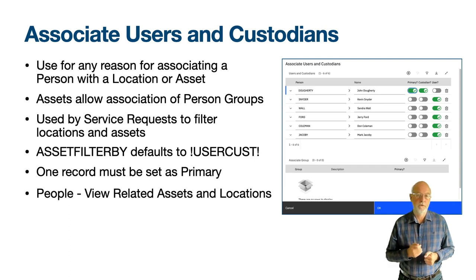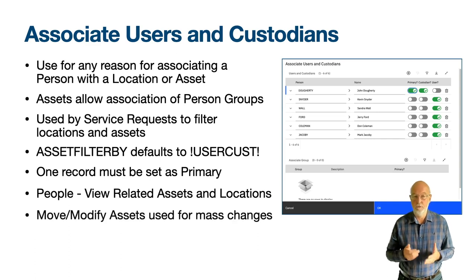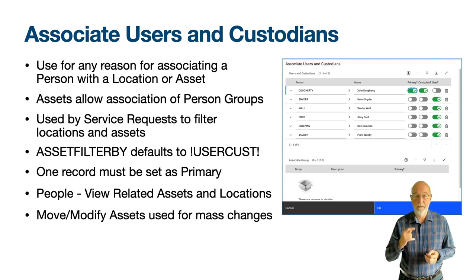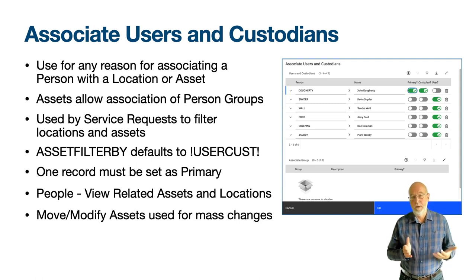The changing of users and custodians for multiple records is achieved in the assets application through the move modify assets action and users and custodians tab. This operates on the selected set of assets and has two sub-tabs: modify selected and modify all. Modify selected allows different changes to each asset by making that asset record active in the assets table window, while modify all applies the change to all assets. There is no ability to mass modify users and custodians in the locations application.